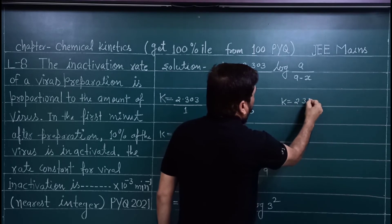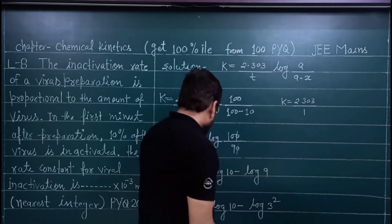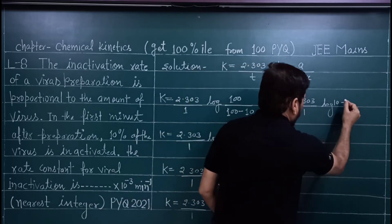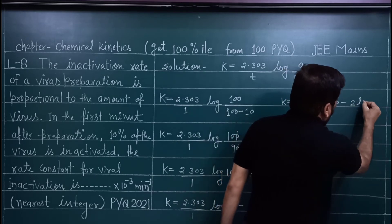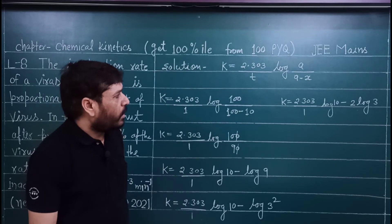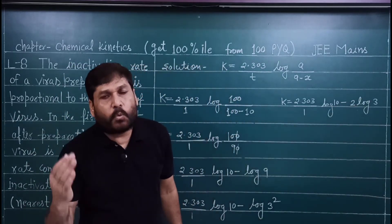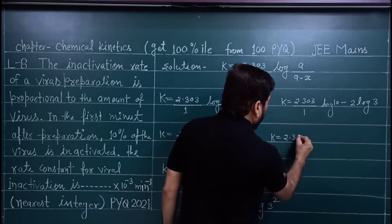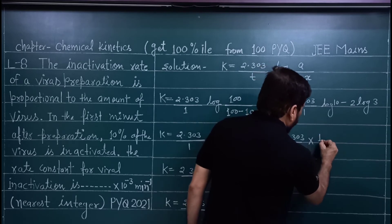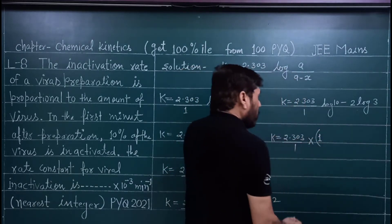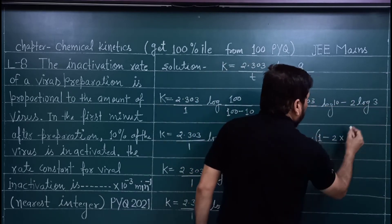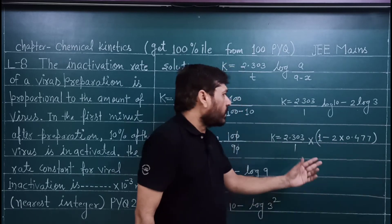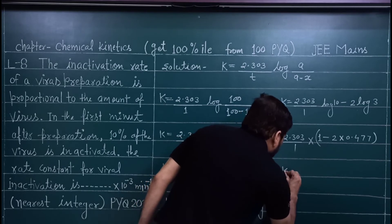So: k = 2.303/1 × (log10 − 2 log3). Substituting values: log10 = 1 and log3 = 0.477. So it becomes: k = 2.303 × (1 − 2 × 0.477) = 2.303 × (1 − 0.954). Now multiply this out to get k.